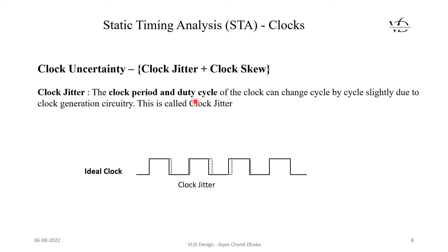This is called clock jitter. If you see here, the solid line is our ideal clock. But as I said, there is nothing like ideal in the real world. The clock generator circuitry generates some variations while generating the clock signal. If you see the dotted line here...